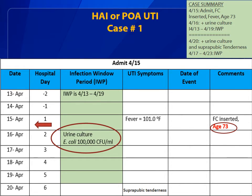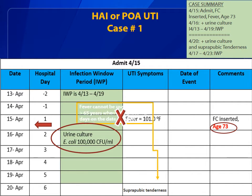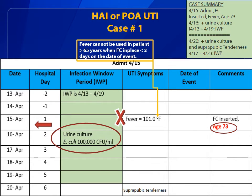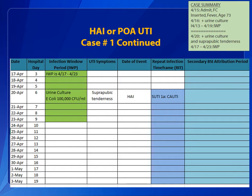The answer is no. The patient had no symptoms of UTI during the infection window period. This can't be considered an HAI either. The symptom of fever alone cannot be used in a patient greater than 65 years of age when a Foley catheter has been in place for less than two days. The patient remains in the hospital. On April 20th, a second urine culture is collected and is positive again for E. coli. Would that make this a healthcare-associated infection?